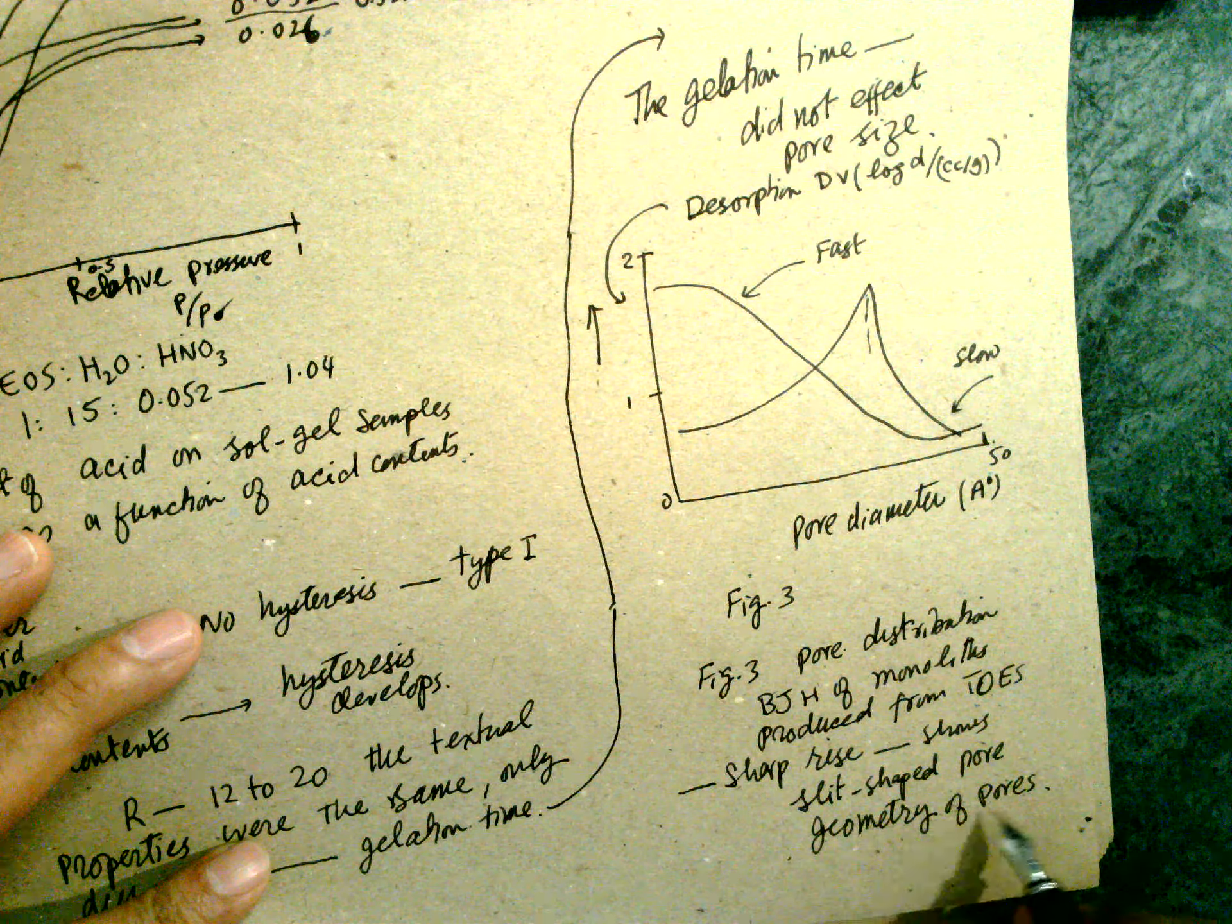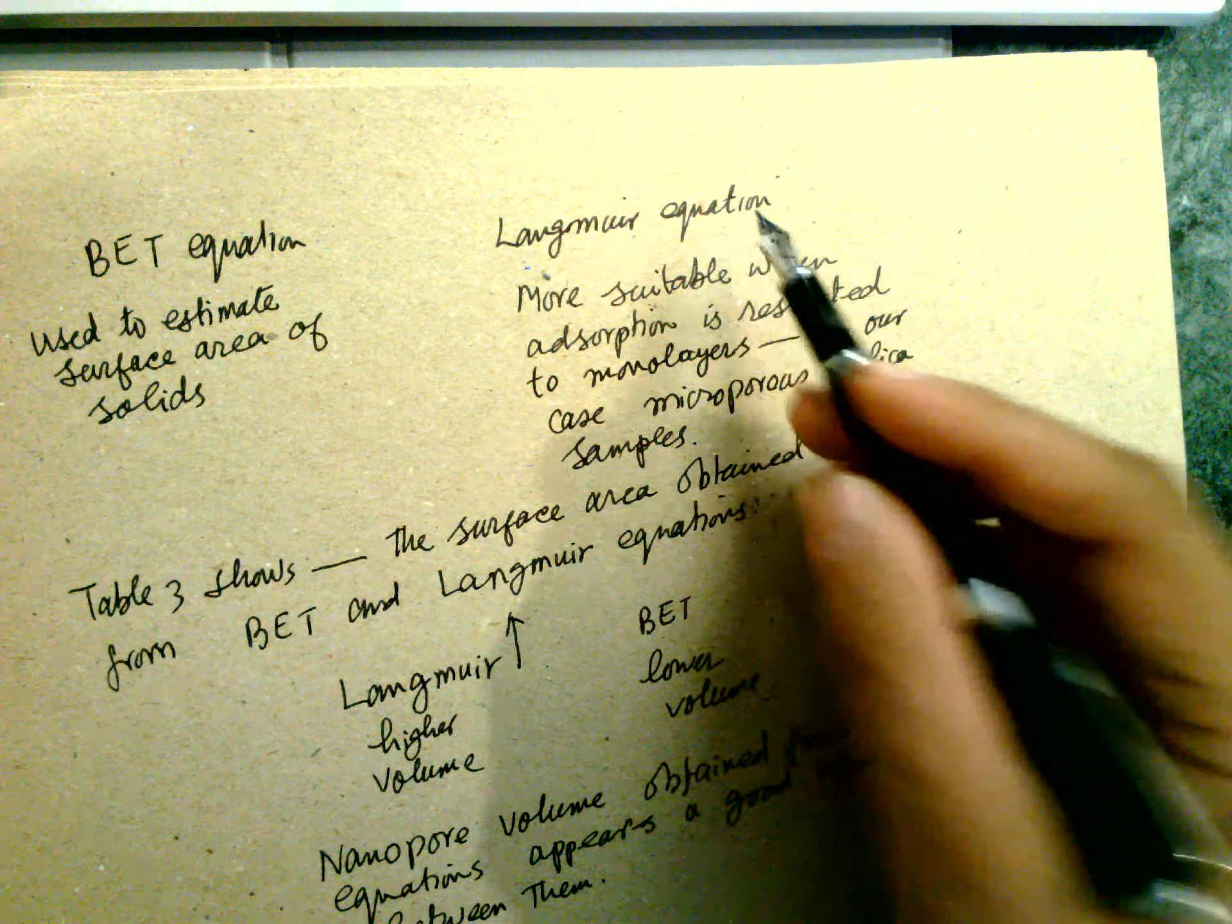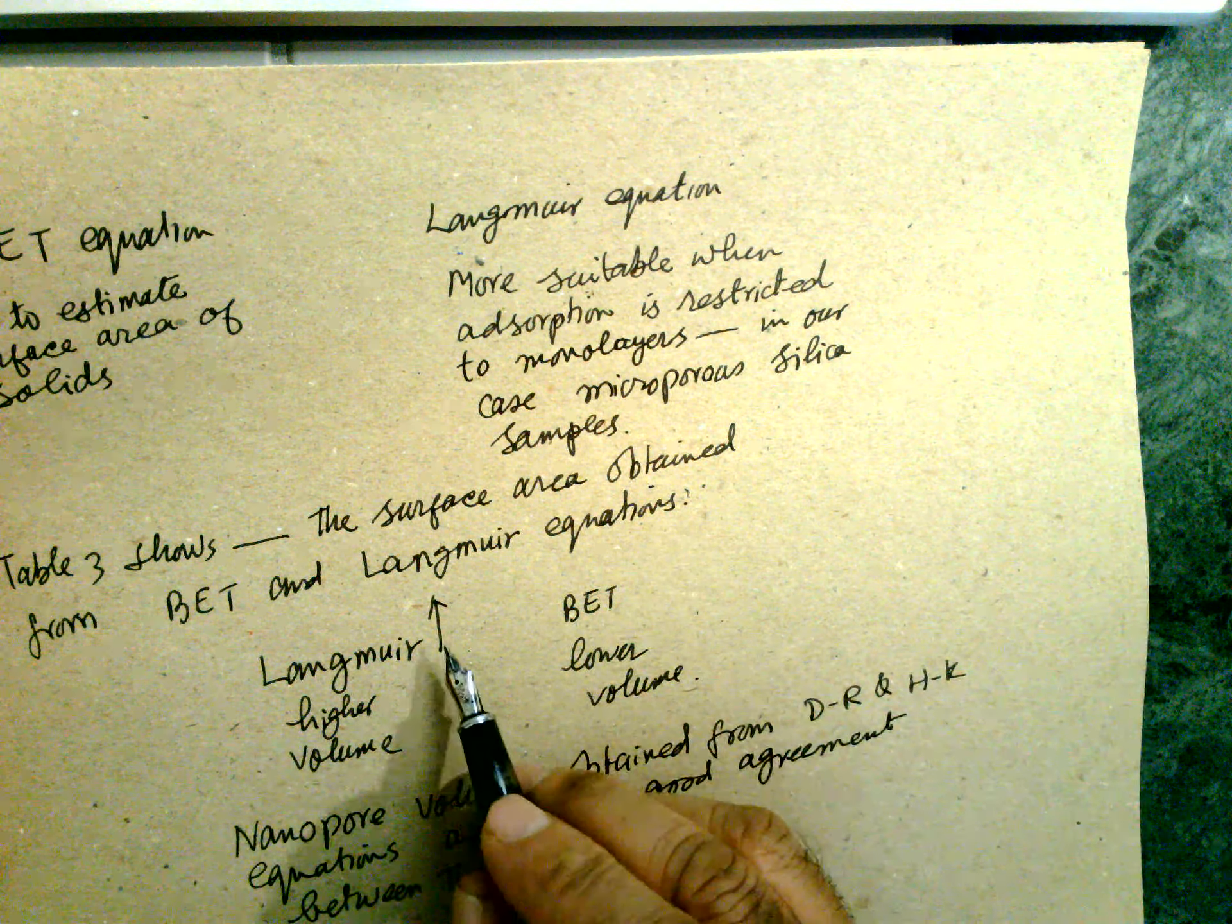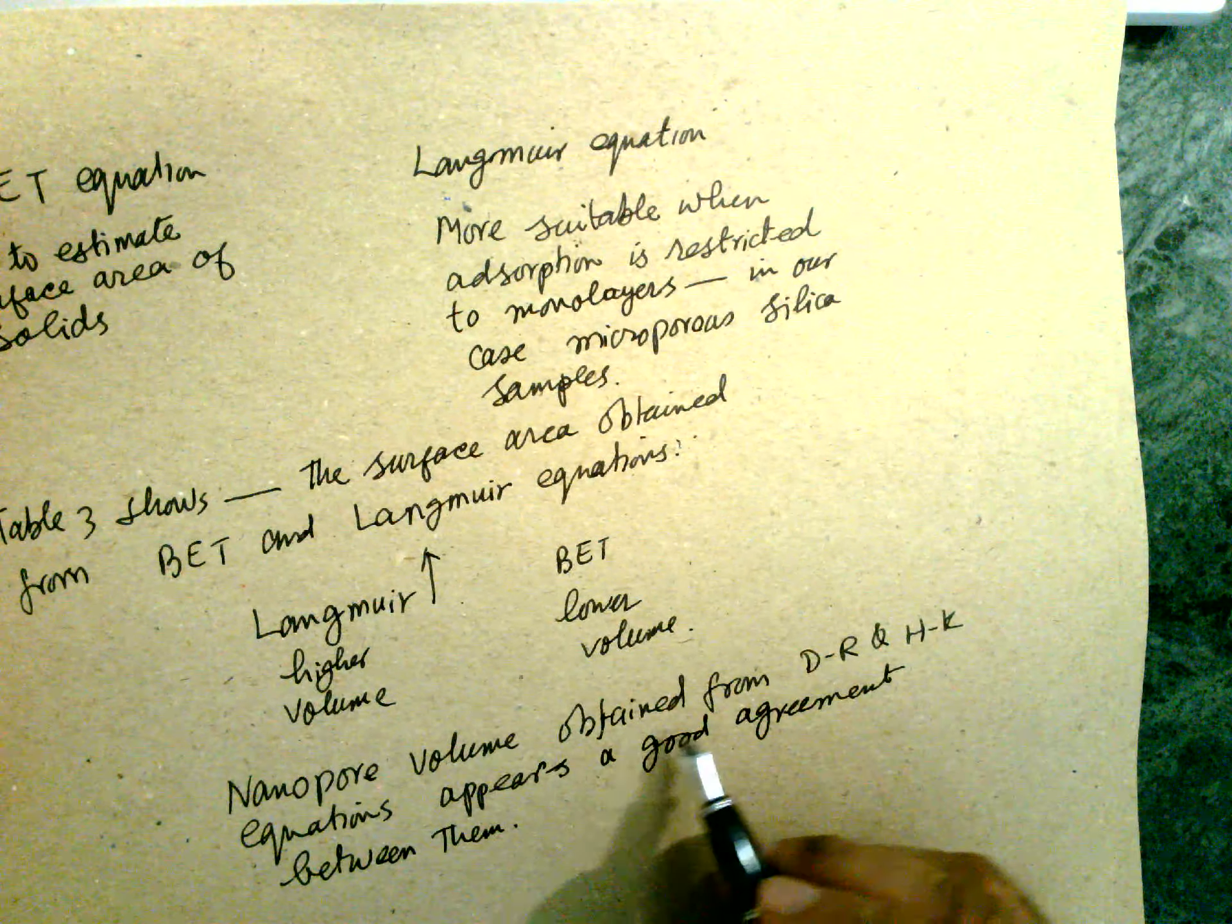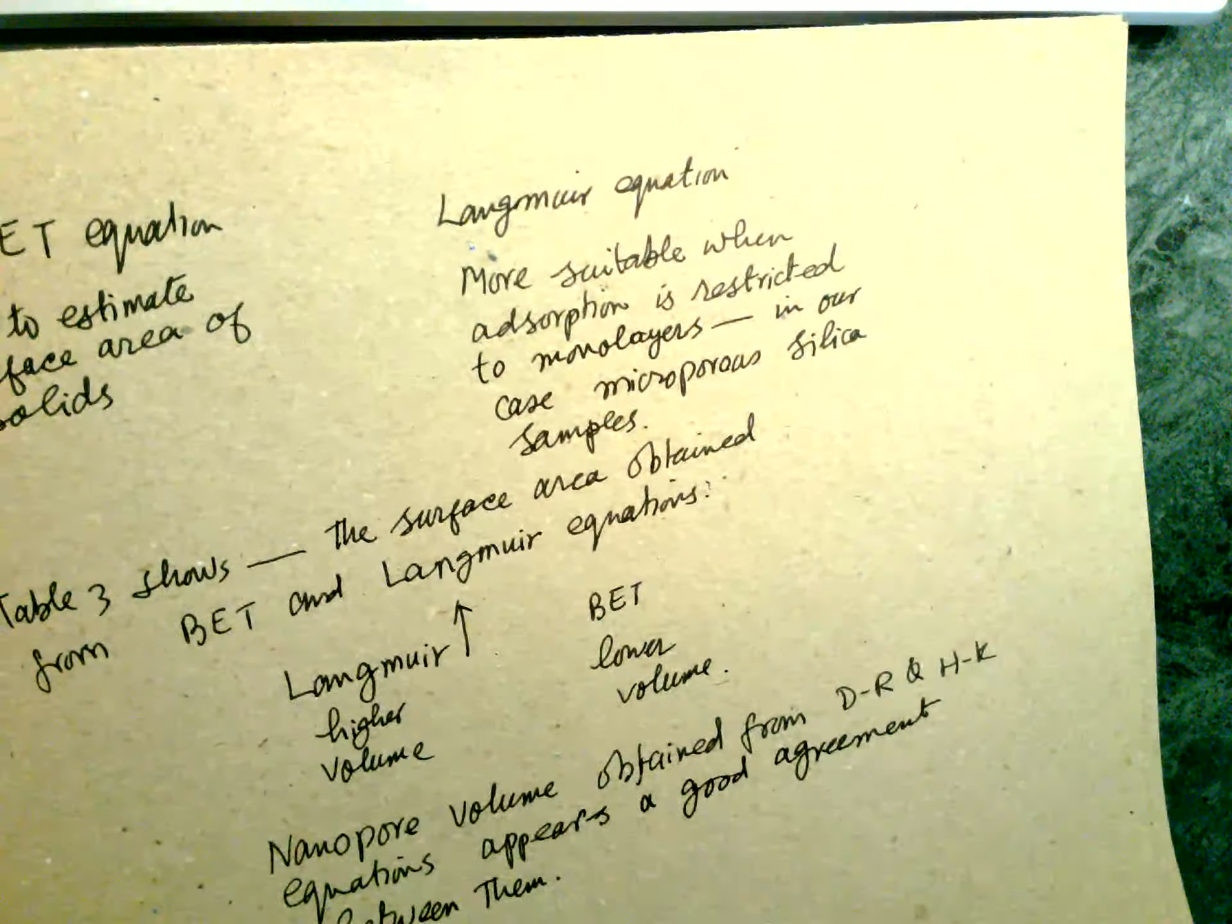The pore distribution produced from TEOS, sharp increase shows the slit type pore geometry of the pores. BET equation used to estimate the surface area of the solid, Langmuir equation also. Table 3 shows that the surface area obtained from BET and Langmuir equations. Langmuir higher volume, and BET lower volume. Nanopore volume obtained from the DR and HK equation appear to be in good agreement between them.